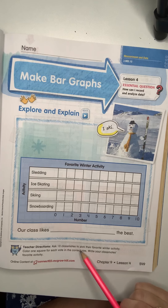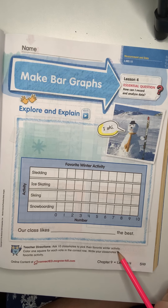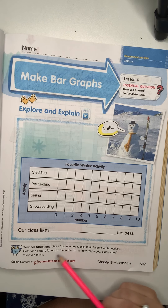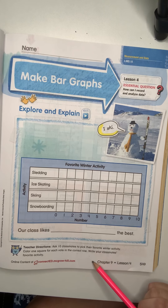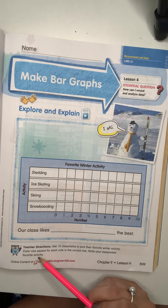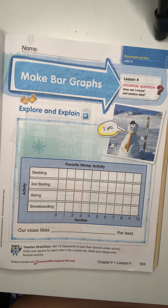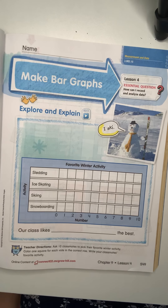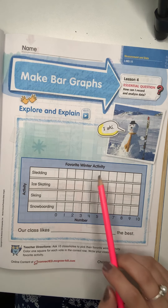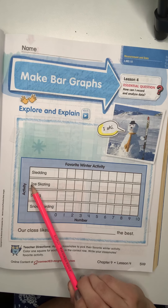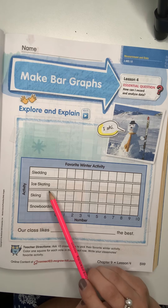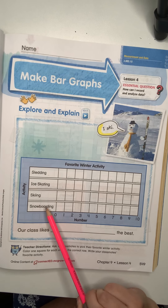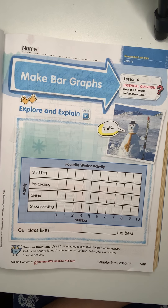Ask 10 classmates to pick their favorite winter activity, color one square for each vote in the correct row, and write your classmates' favorite activity. You guys don't have 10 classmates to ask today, so I'm just going to tell you what to fill in. The activities we have are sledding, ice skating, skiing, and snowboarding.